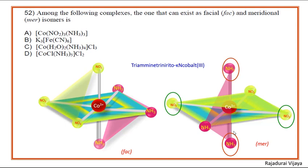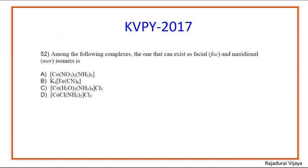So this complex — triamine trinitrito cobalt(III) — shows both the facial and meridional isomers. Therefore, the correct option is A, as it is the MA₃B₃ type complex that can exist as both facial and meridional isomers.